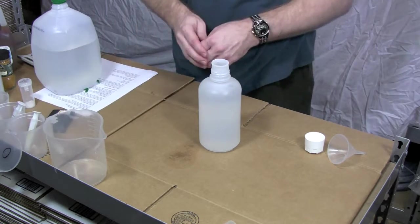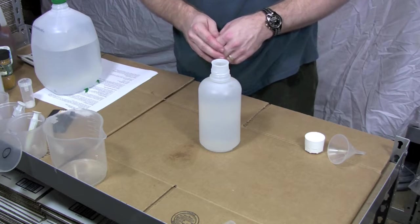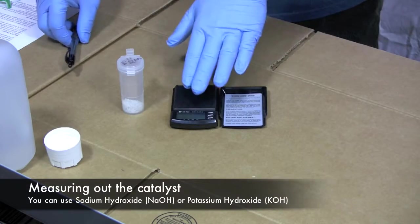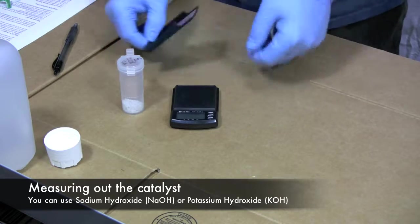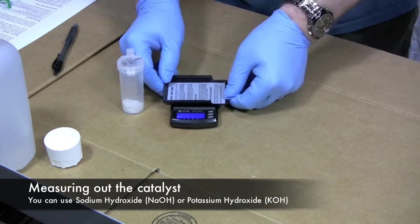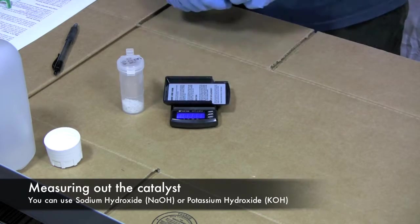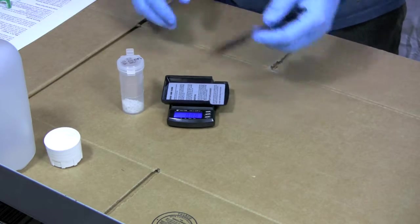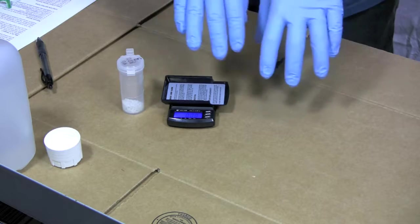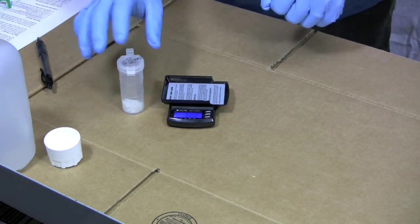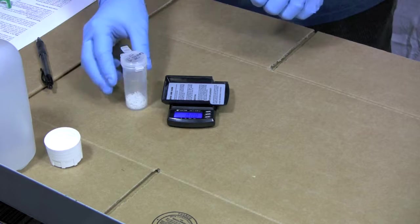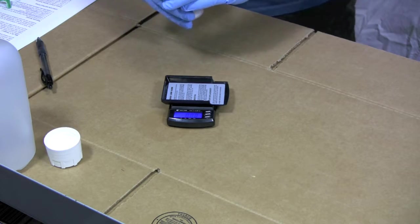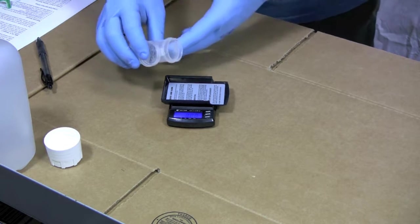My next step is to measure out a gram of potassium hydroxide. To do that we've unpacked the scale that came with the kit. We've turned it on. We're going to tare the scale which means we put the weighing tray on there and we set it to zero using the tare function. Also you'll notice that I have some rubber gloves on. We're playing with a caustic base so it's important that we try and be safe.